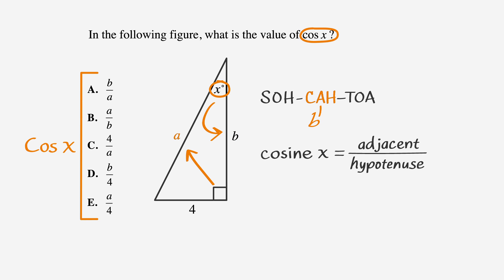B is adjacent to angle X, and A is the hypotenuse. So the answer is B over A, which is choice A. Great job. You deserve a treat.